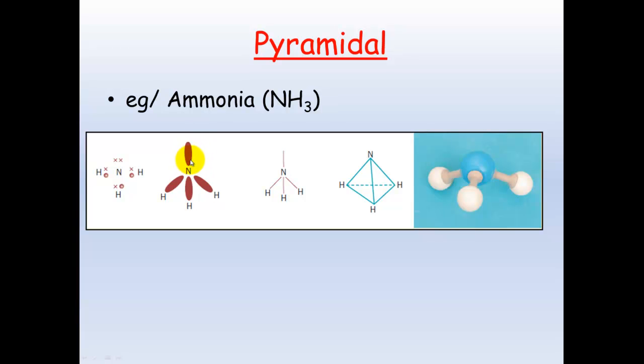When we're looking at the shape and it's forming its shape, it takes into account this lone pair of electrons on the nitrogen, and thus will form that tetrahedral shape. However, when describing the shape of the molecule, we ignore this lone pair and just look at the three bonding atoms, giving a pyramidal shape.